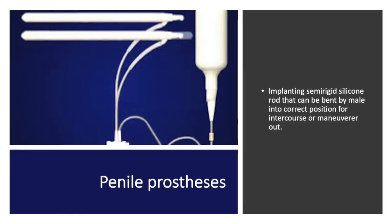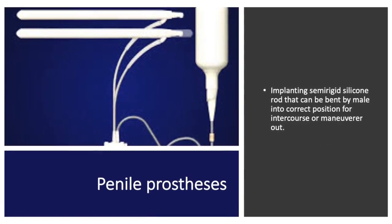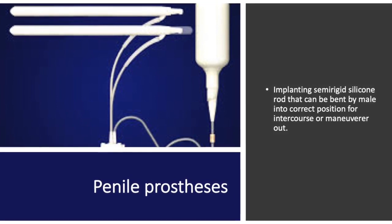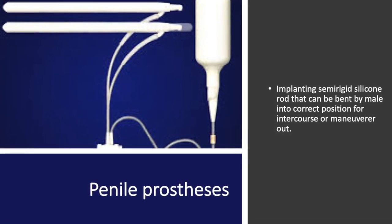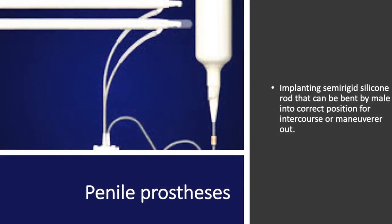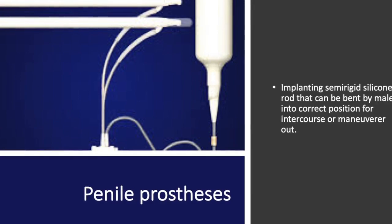Penile prosthesis involves the implanting of semi-rigid silicone rods that can be bent by males into the correct position for intercourse.